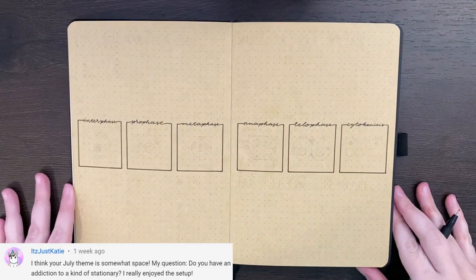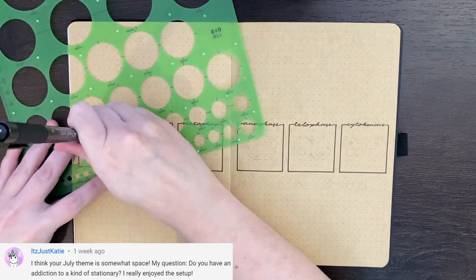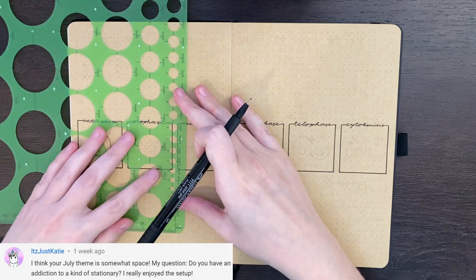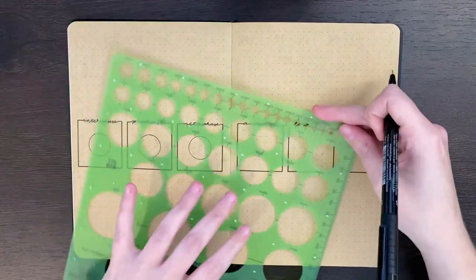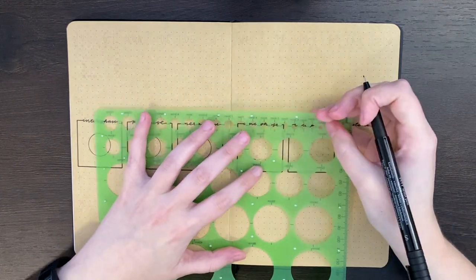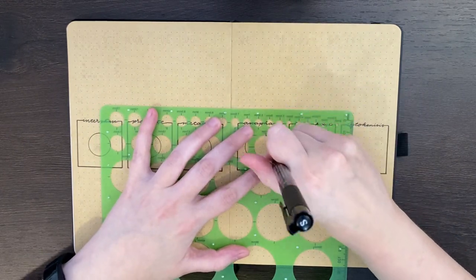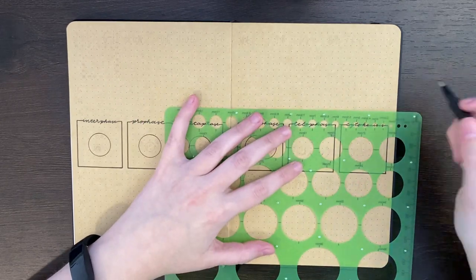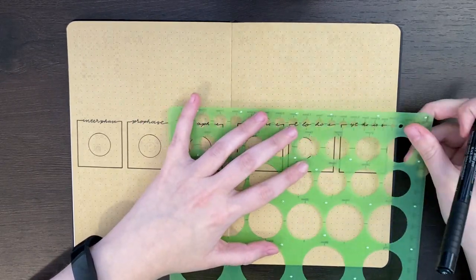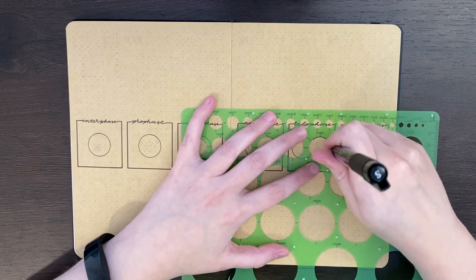Our next question comes from It's Just Katie, who asked, Do you have an addiction to a kind of stationary? I think that probably the closest thing that would come to any sort of addiction would just be my love of pens. I like trying new pens and seeing how nicely they write on paper, and all of that kind of stuff. The two types of pens that I probably prefer are felt tip and ballpoint, but I don't really use a lot of those in my journal.